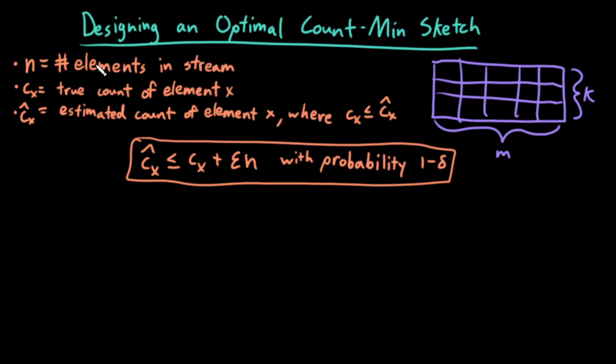Every element that I'm going to see that I want to count, that's n. And c sub x is the true count of element x. And c hat sub x is the estimated count of element x. Remember, our algorithm for estimating the count was: take the minimum of all of the counts in each row that x could potentially have had. That minimum is our estimated count. And remember that our true count must be less than or equal to this estimated count.